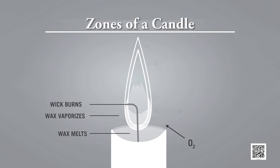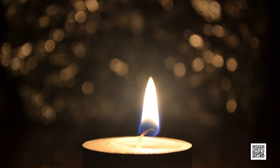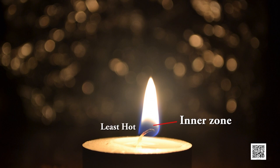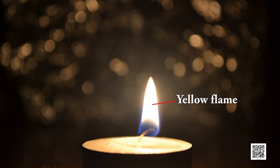Now let us conduct an activity to see the zones of the candle. Light a candle with the help of a matchstick. Surrounding the wick you can see a dark zone — this is called the inner zone, where you can see unburnt wax vapors. This zone is the least hot.